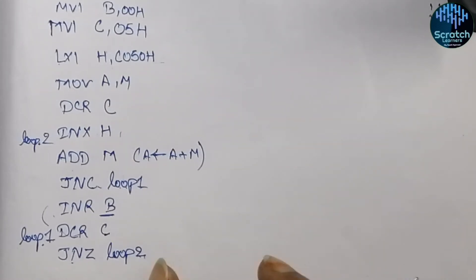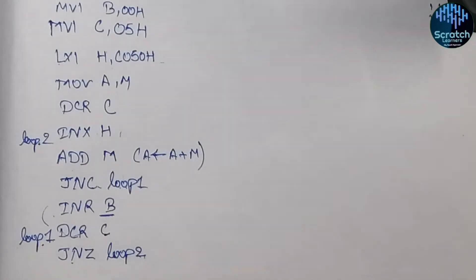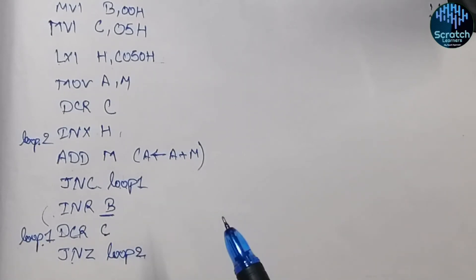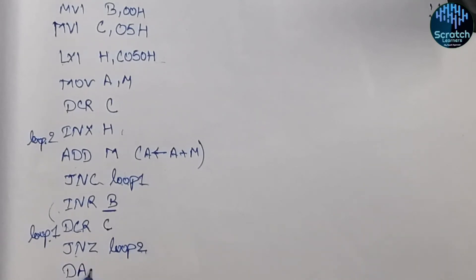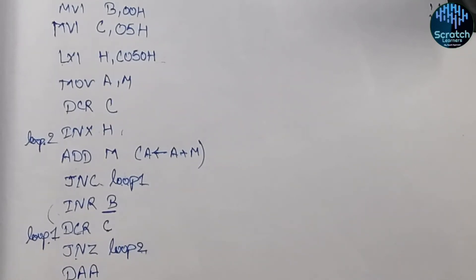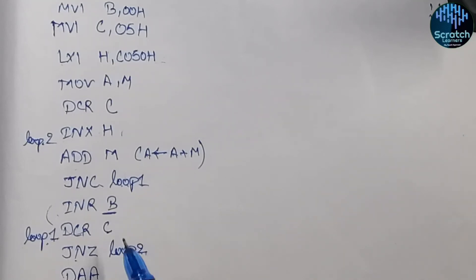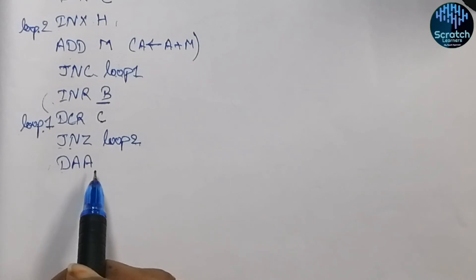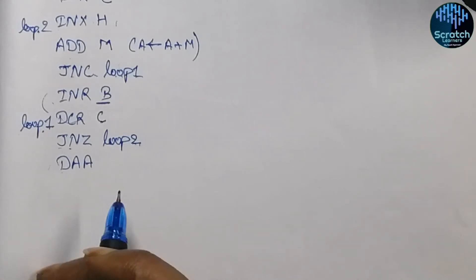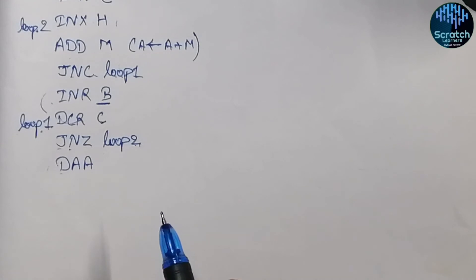We now have our hexadecimal result, but we want to convert it into BCD. By performing a single instruction we can do this — that instruction is DAA, which stands for Decimal Adjust Accumulator. What it does is convert the hexadecimal result in the accumulator into BCD format. By just performing this one instruction, we have our BCD result.